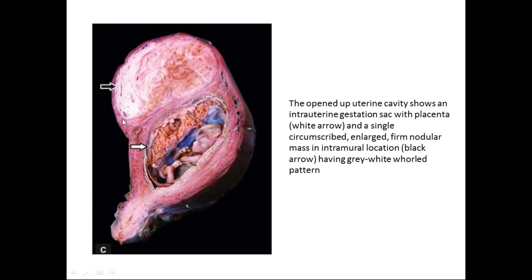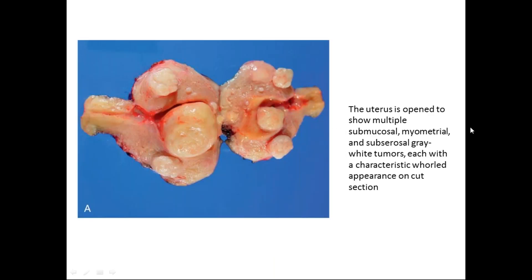Usually leiomyomas can cause infertility. This is a picture from Robbins showing a cut-open uterus with multiple leiomyomas. When there are multiple leiomyomas, we call it leiomyomata; if there is only one fibroid, we call it leiomyoma. The uterus is opened to show multiple submucosal, intramural, and subserosal grey-white tumors, each with a characteristic whorled appearance on cut surface.